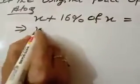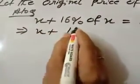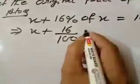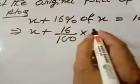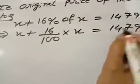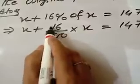Or X, 16%, you write 16% convert divided by 100, up means, into X, is equal to 1479.